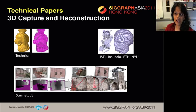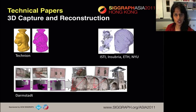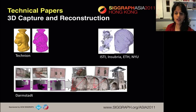In the 3D Capture and Reconstruction session, we have a paper to reconstruct 3D objects from potentially noisy cross-sections. A method to globally parametrize a surface represented by a set of range images. And a new method for fusing depth maps at various scales.